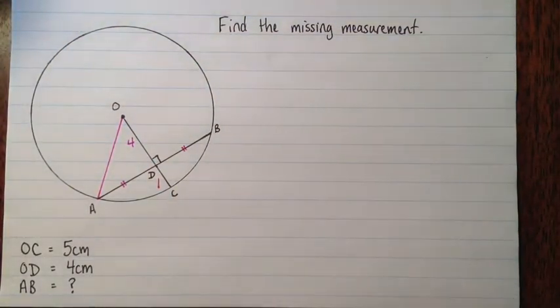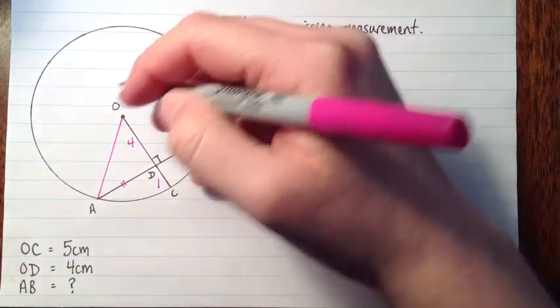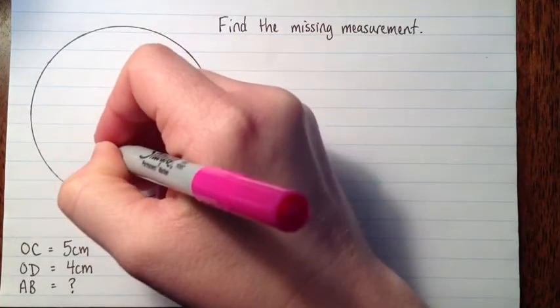The reason it's often helpful to draw in a radius is because every radius is the same length. So here we know that O to C is 5, so that means that OA, which is another radius, is also 5.